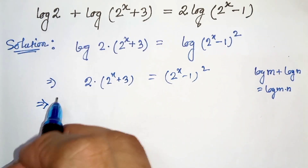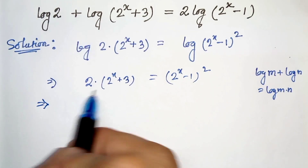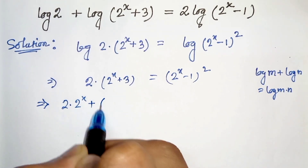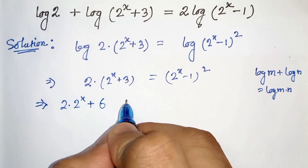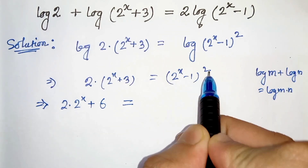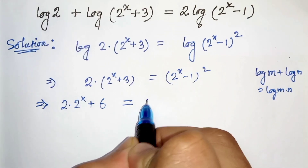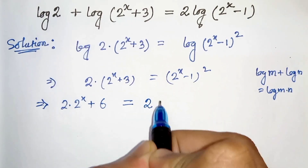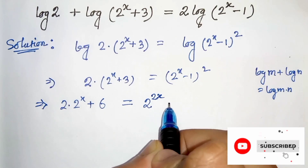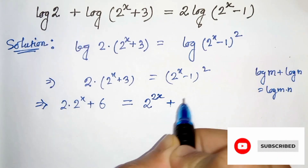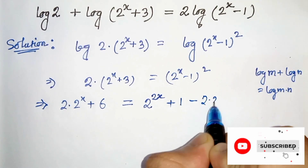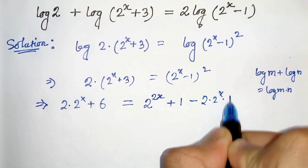Now in the next step let's simplify this. So 2 times 2 to the power x plus 2 times 3 is 6. And on the right hand side we apply the (a minus b) whole square formula, which gives a squared — that is 2 to the power 2x — plus 1 squared, minus 2ab, which is 2 times 2 to the power x times 1.